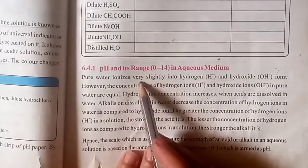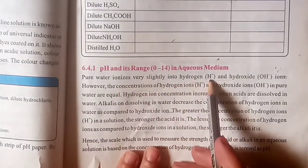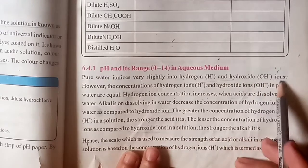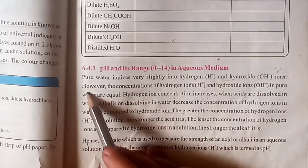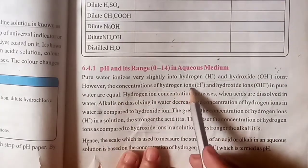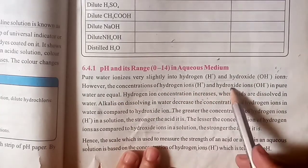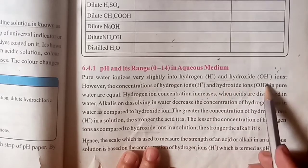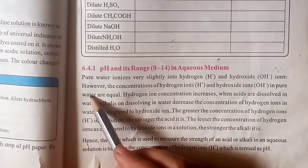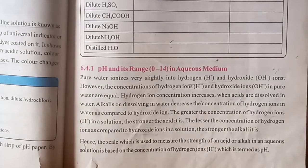Pure water ionizes very slightly into the hydrogen and hydroxide ion. However, the concentration of hydrogen ion H+ and hydroxide ion OH- in pure water are equal.